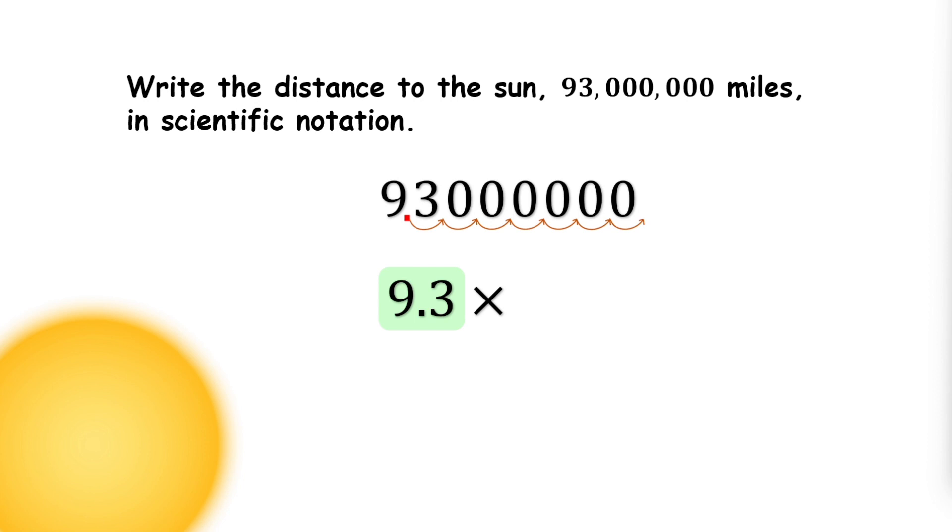So seven is going to be the exponent, and this is in scientific notation. Therefore, the number 93 million written in scientific notation is 9.3 times 10 to the power of 7.